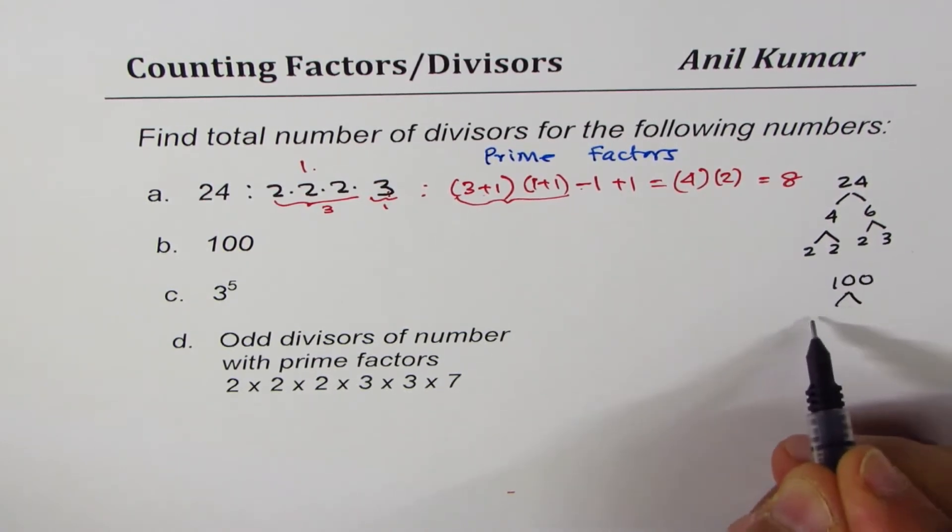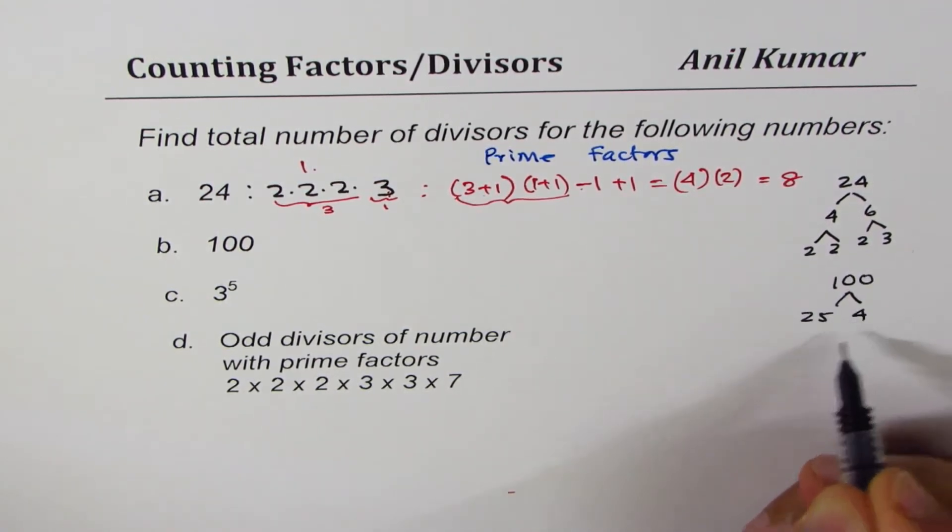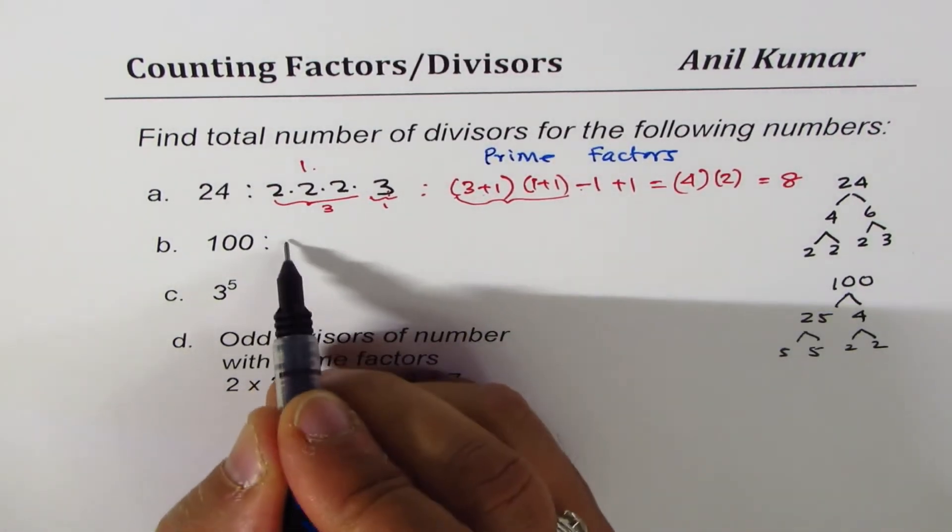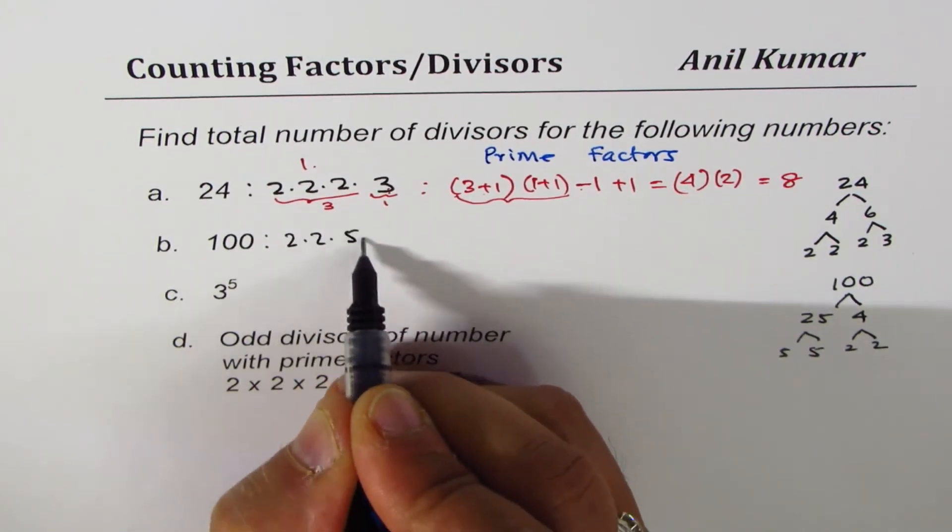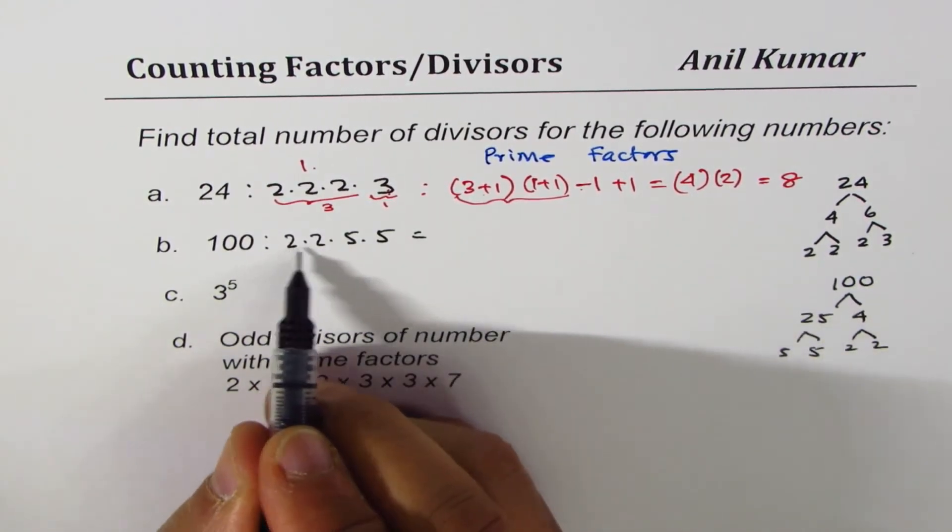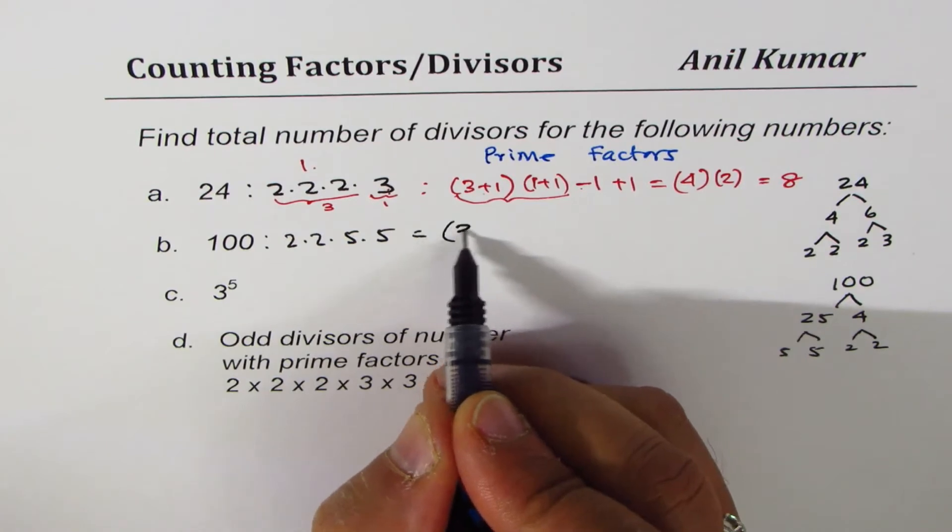Let's do 100 now. With 100 we could write again 25 times 4. 25 is 5 times 5, 4 is 2 times 2, so we could write this as 2 times 2 times 5 times 5.